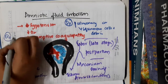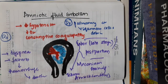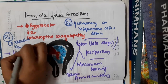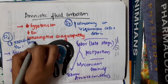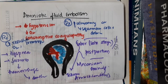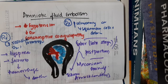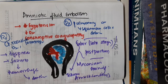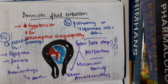Treatment involves cardiopulmonary resuscitation and symptomatic treatment. You should give oxygen therapy and inotropic support if there is failing myocardium. If the embolism occurs before delivery of the baby, you should first stabilize the mother, then perform a cesarean section and deliver the baby to improve the newborn outcome.